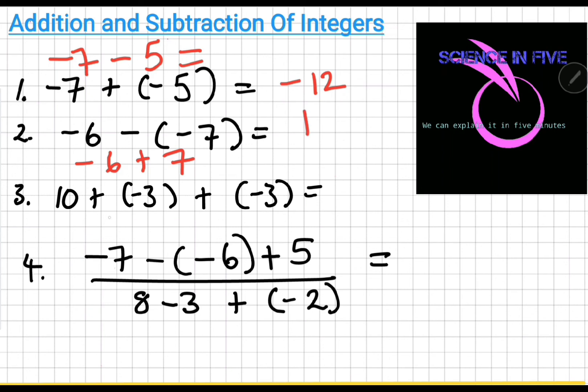Ten plus minus three plus another minus three. So this becomes ten minus three minus three. Ten minus three is seven. Seven minus three is four.